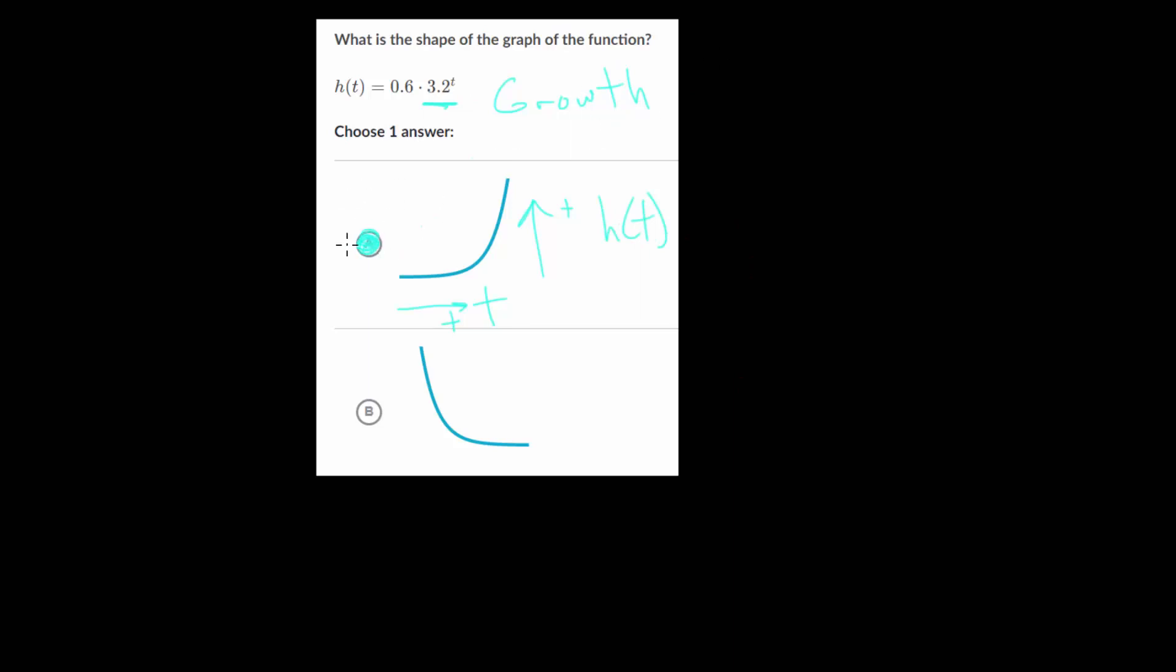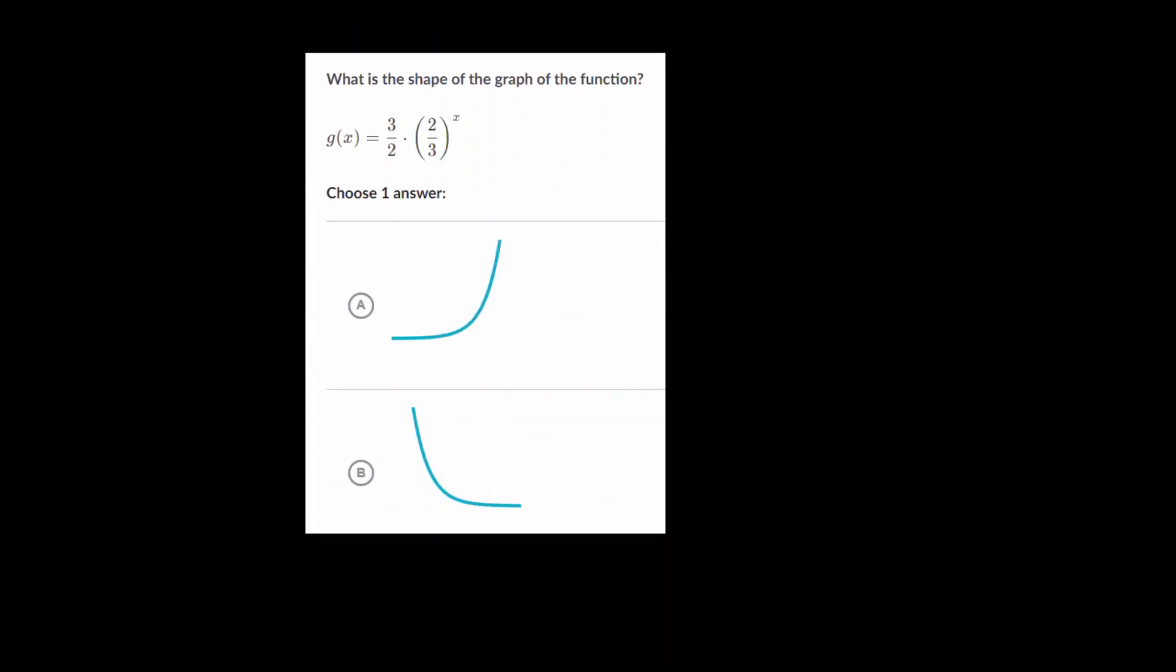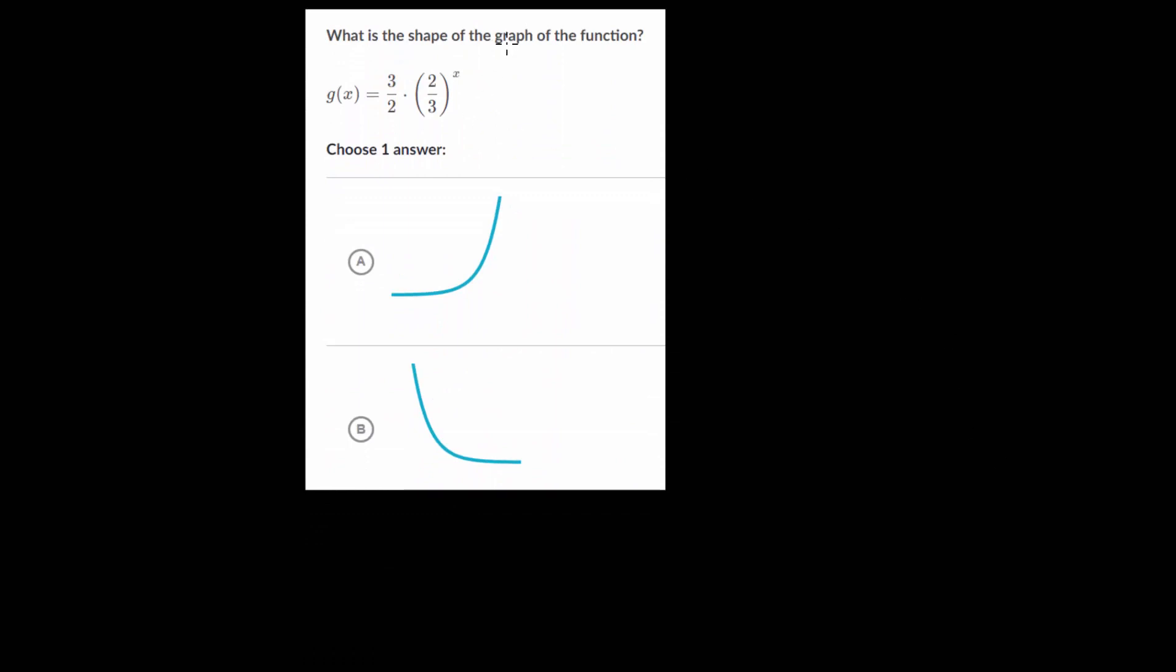And so that's indicative of growth, whereas decay is the opposite. As t increases, the function value decreases. So this one we can label as decay. And we'll look at one final question here.